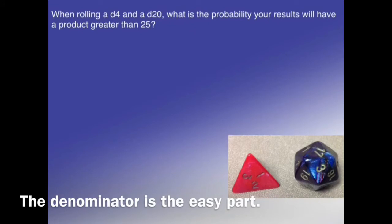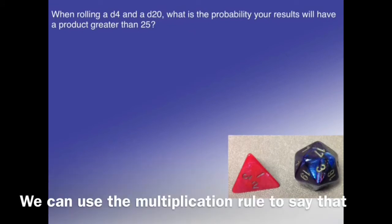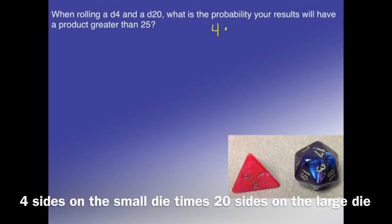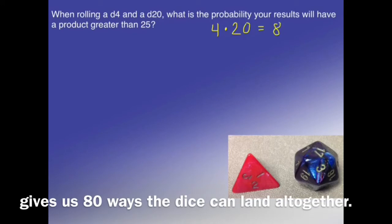The denominator is the easy part. We can use the multiplication rule to say that 4 sides on the smaller die times 20 sides on the larger die gives us 80 ways the dice can land all together.